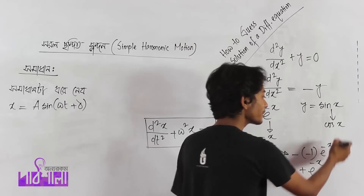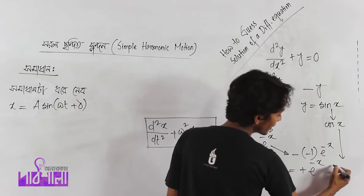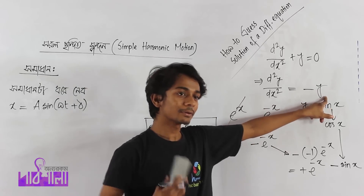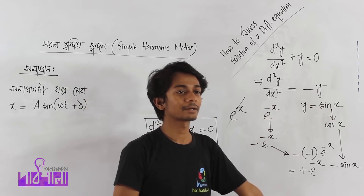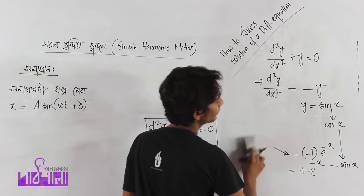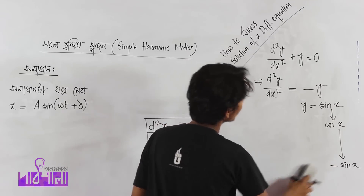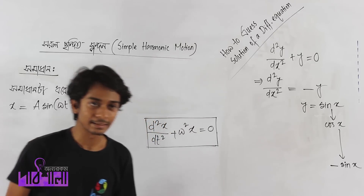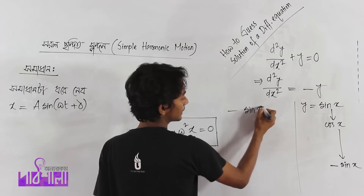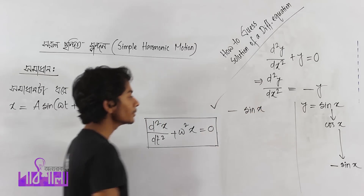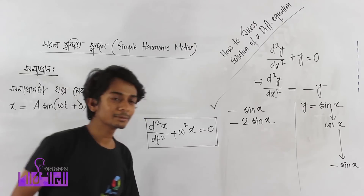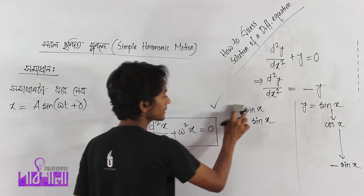If we try sin x, differentiating twice gives minus sin x. So y equals sin x substituted gives minus sin x plus sin x which equals 0, but it gives minus 1. So if you have a negative answer, the answer is minus sin x. The answer is minus sin x.